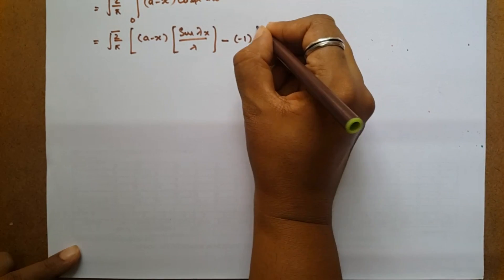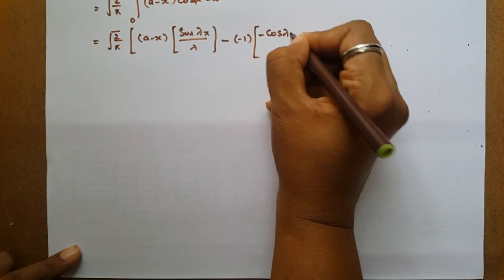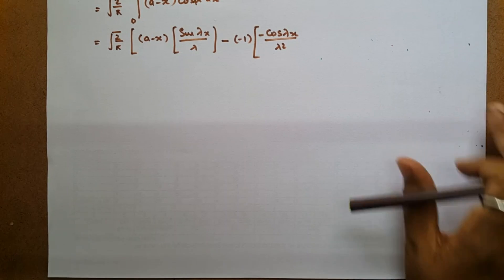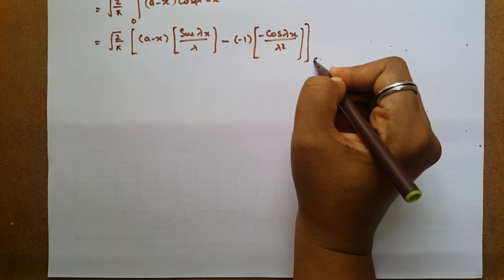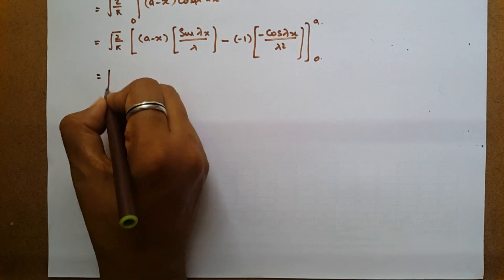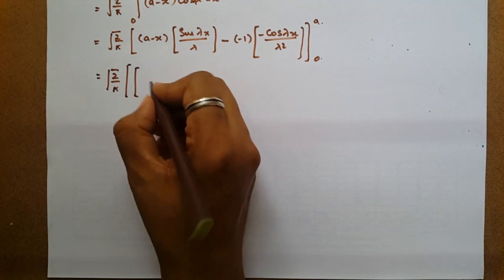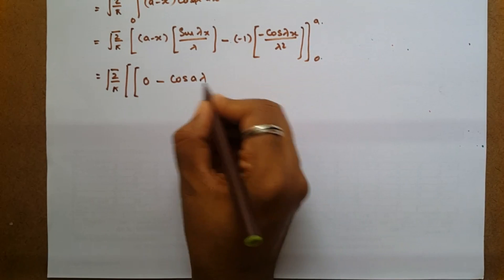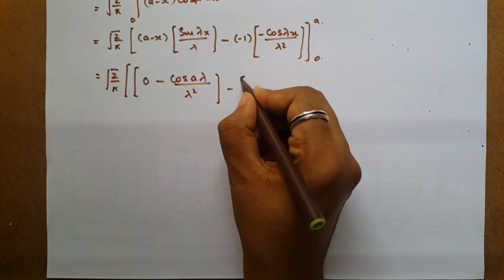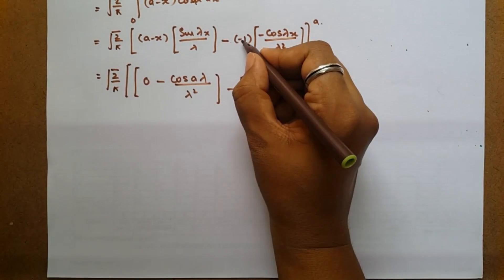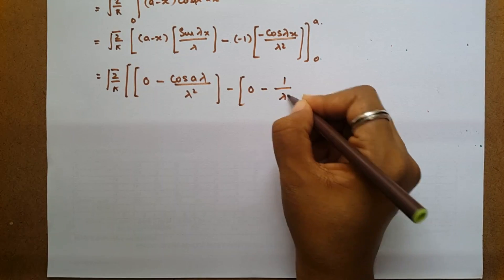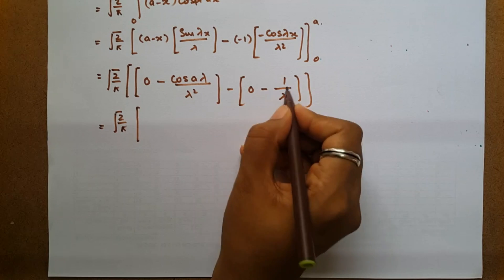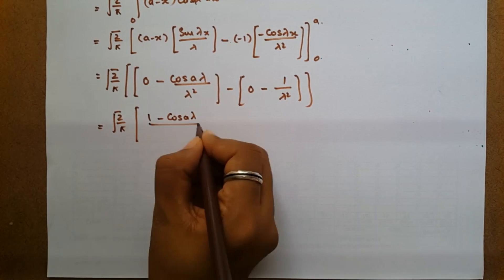Integrating by parts: we get sin λx by λ, then integral of cos λx by λ, and then minus cos λx by λ². Applying limits from 0 to a: the upper limit gives minus cos(aλ) by λ², and the lower limit gives minus of minus cos(0) by λ² which is plus 1 by λ². So the result is root(2/π) times (1 minus cos aλ) by λ².